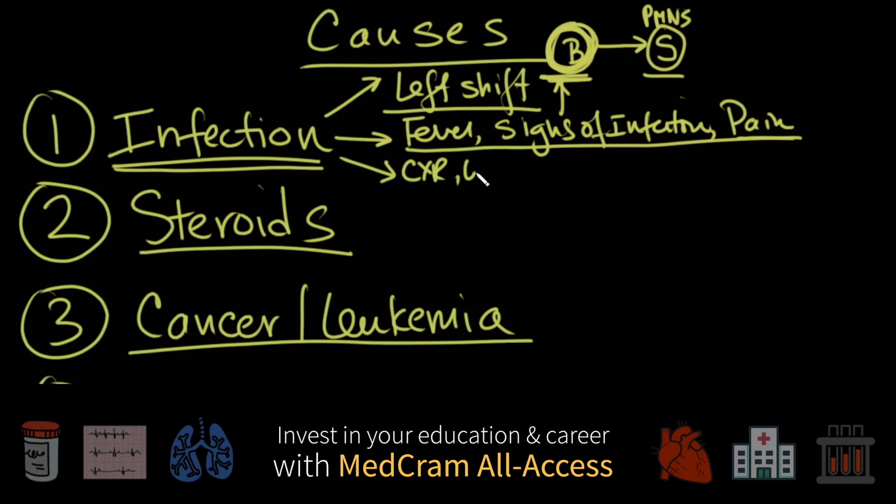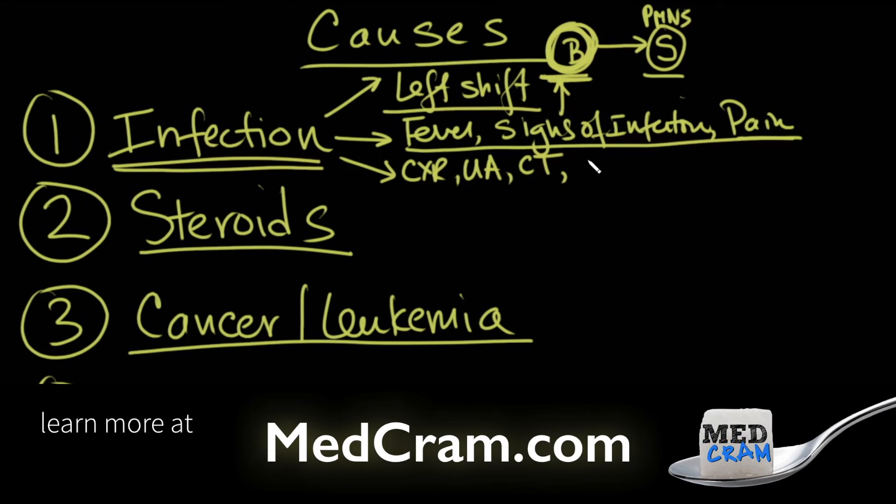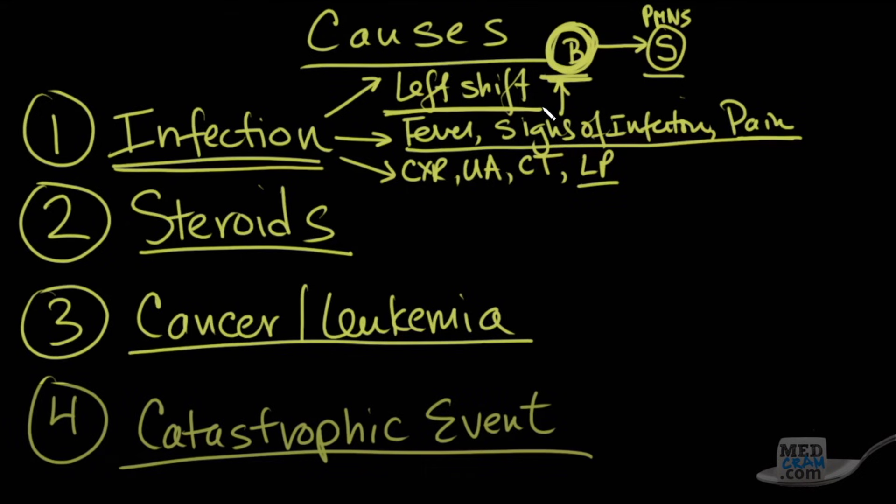Chest x-ray, get a urinalysis. You might even need to get a CT scan to look. If the patient has a fever and is altered, by all means, get a lumbar puncture to rule out meningitis. The biggest infections are pneumonia, which you'll see on a chest x-ray, a urinary tract infection, which you'll see on a urinalysis.